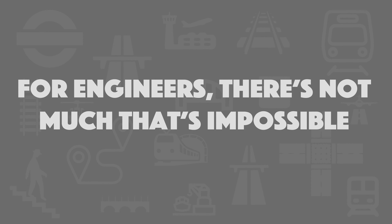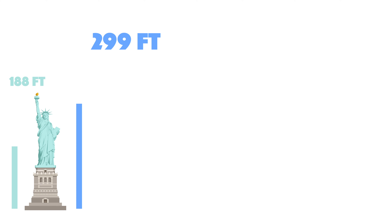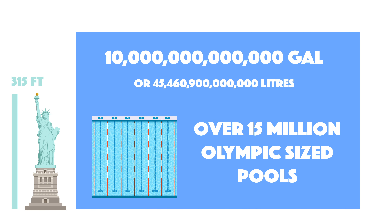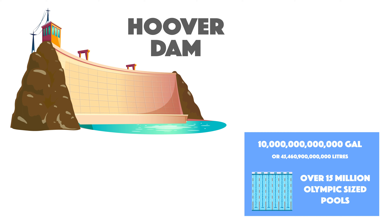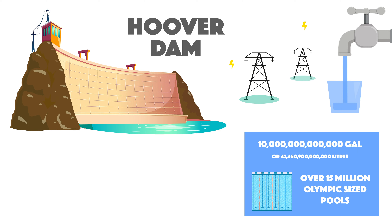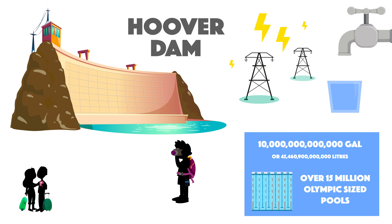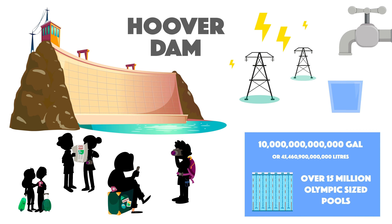Sometimes what many think is impossible is actually possible. Imagine a dam that could hold back a 500-foot-deep, 10-trillion-gallon reservoir. Well, there is such a dam — the Hoover Dam, built in 1936 and still standing today as a source of fresh water, electricity, and not to mention a top tourist attraction with more than a million visitors each year.